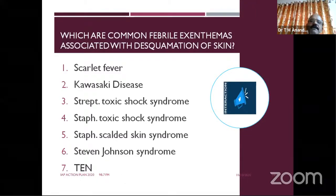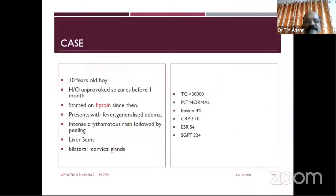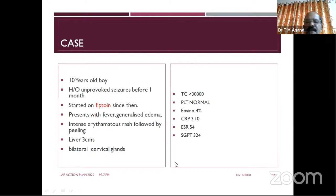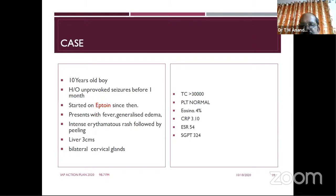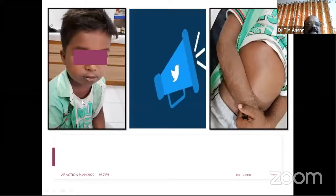Toxic epidermal necrolysis also shows desquamation. All these conditions must be kept in mind when dealing with a child with a skin rash and desquamation. The next case: a ten-year-old boy started on phenytoin one month ago for unprovoked seizure, now presenting with fever, generalized edema, and intense erythematous rash following that period. He also had hepatomegaly and bilateral cervical lymphadenopathy. CBC: leukocytosis, normal platelets, eosinophilia at 4%, CRP mildly elevated, ESR slightly high, and mildly elevated liver enzymes.